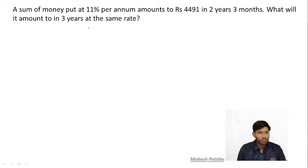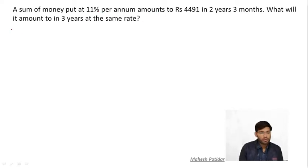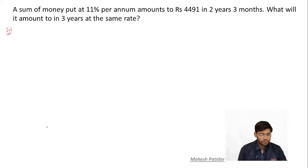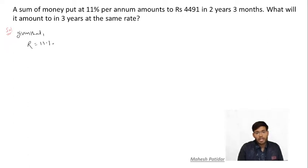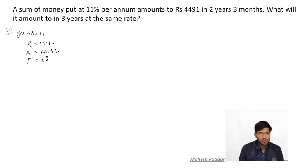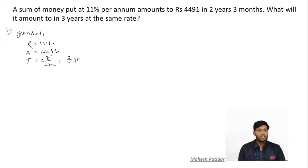Question: A sum of money put at 11% per annum amounts to rupees 4491 in two years and three months. What will be its amount in three years at the same rate? First of all, what is given: rate = 11% per annum, amount = ₹4491, and time = 2 years and 3 months = 2 and 3/12 = 9/4 years.